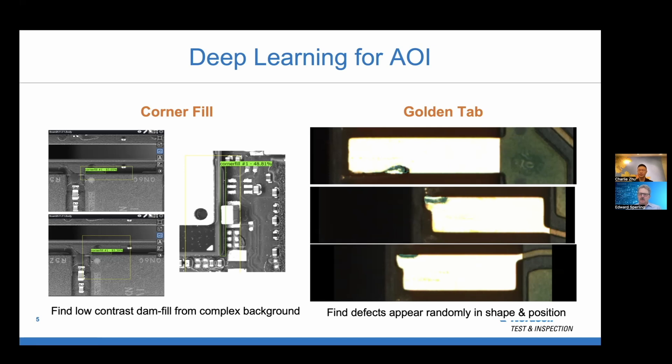Yes, you can tell which are the latent defects that will become killer defects and which ones are not.